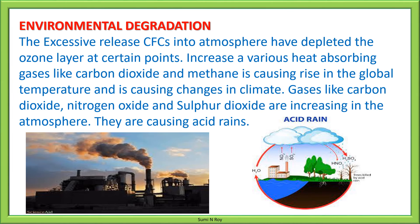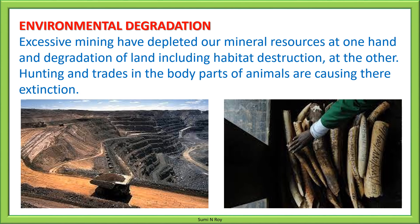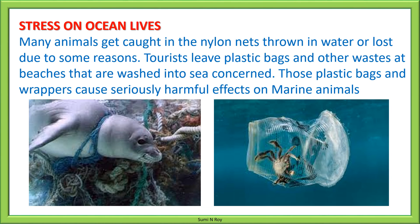The excessive release of chlorofluorocarbons into the atmosphere has depleted the ozone layer at certain points. Increase in heat-absorbing gases like carbon dioxide and methane is causing a rise in global temperature and changes in climate. Gases like carbon dioxide, nitrogen oxide, and sulfur dioxide are increasing in the atmosphere and are causing acid rains. Excessive mining has depleted our mineral resources, and degradation of land including habitat destruction is also occurring. Hunting and trade in body parts of animals are causing their extinction. Many animals get caught in fishing nets thrown in water, and tourists leaving plastic bags and other waste at beaches — which are washed into the sea — cause seriously harmful effects on marine animals.